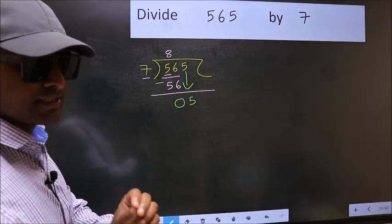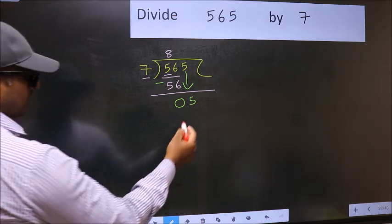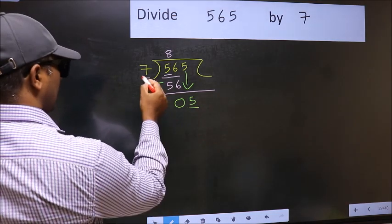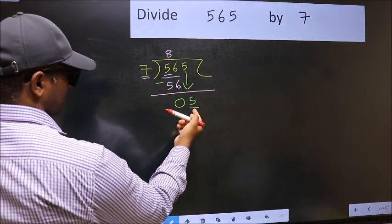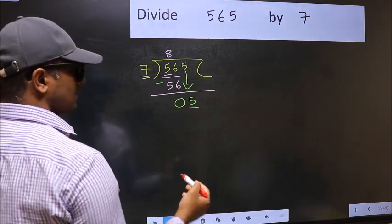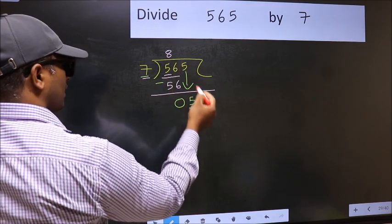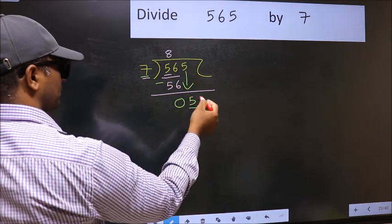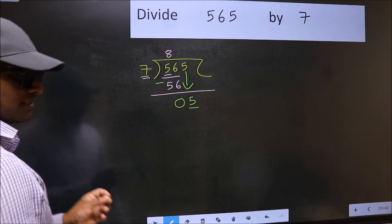And the mistake is this. Here we have 5 and here 7. 5 is smaller than 7. So what many do is, they directly put dot and take 0, which is wrong.